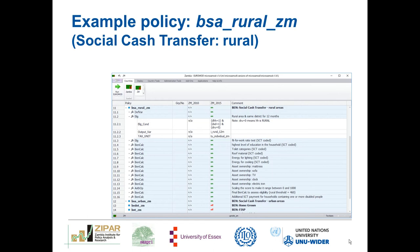Here we have an example of our social cash transfer in rural areas. I'll be going through the PowerPoint first and then moving over to the live version of the model to demonstrate the concepts. Our social cash transfer for rural areas is made up of 16 functions: one DefVar function, two ELEGE (eligibility) functions, one ARITHOP (arithmetic operator) function, and 12 BenCalc (benefit calculator) functions.